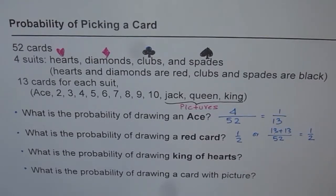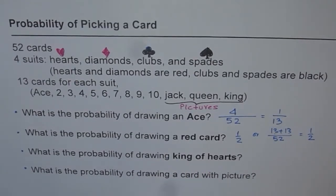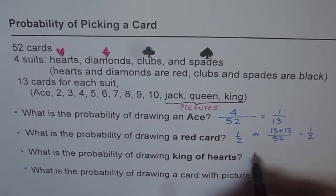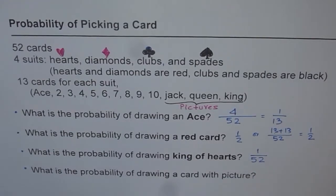The third question: what is the probability of drawing the king of hearts? There is only one king of hearts in the deck of 52 cards, so the answer is simply 1 over 52.